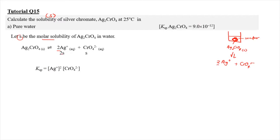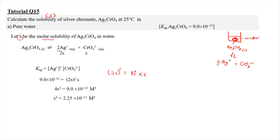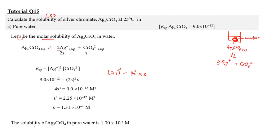The Ksp expression gives Ksp = [Ag⁺]²[CrO₄²⁻] = (2S)² × S = 4S² × S = 4S³. Dividing by 4: S³ = 2.25×10⁻¹², and taking the cube root gives S = 1.31×10⁻⁴ M. Therefore, the molar solubility of silver chromate in pure water is 1.30×10⁻⁴ mol/L.